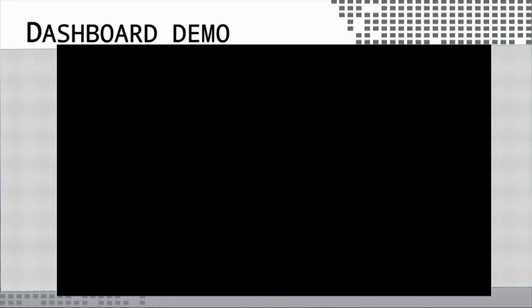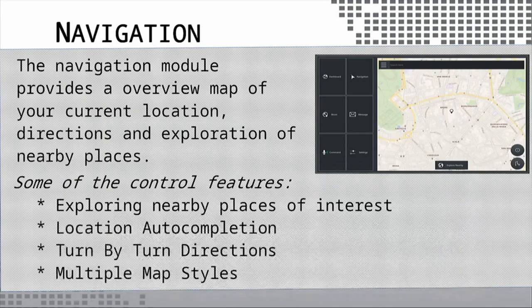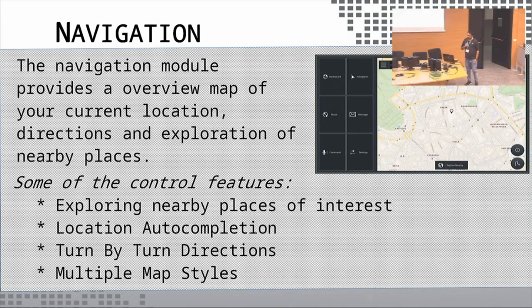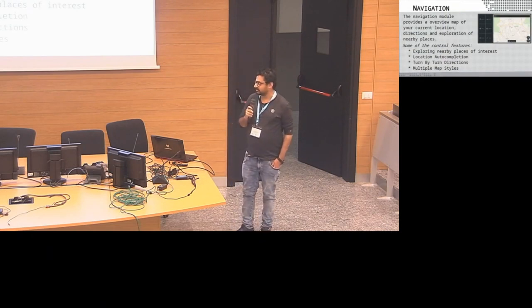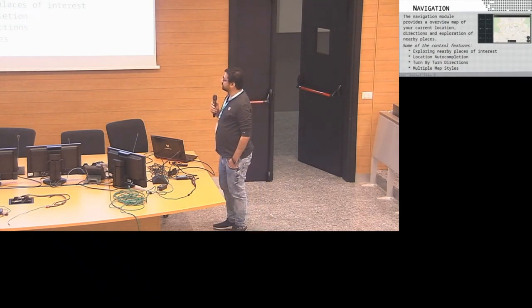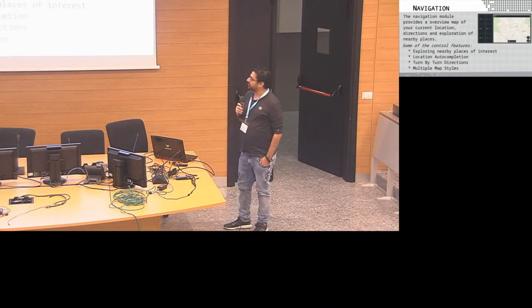That was the dashboard demo of how Mycroft controls our dashboard infotainment system. The second module is the navigation module. This module is basically what normal cars would have with a GPS system — nowadays new cars have it built into their smart infotainment systems. Navigation provides mapping, current location, directions, and exploration of nearby places.